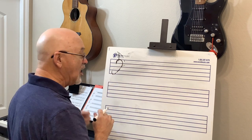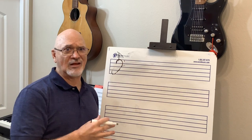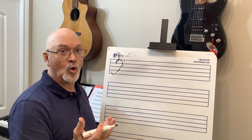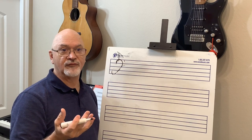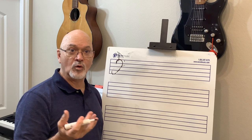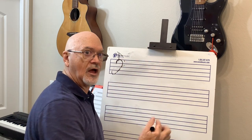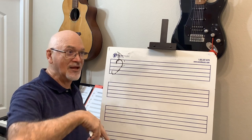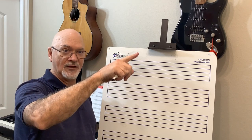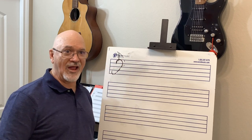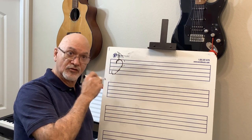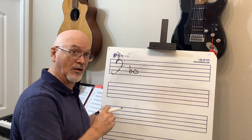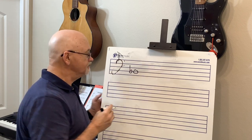In the flat keys, the only key that doesn't have a flat in the name is F. F has one flat, B-flat, and the leading tone is E. But B-flat, E-flat, A-flat, and all the other flat keys do have a flat in the actual name, with an accidental in front of the very first note of the scale.